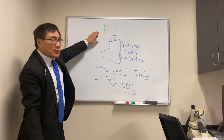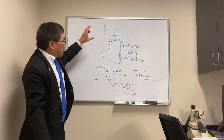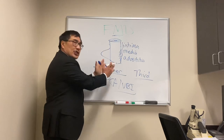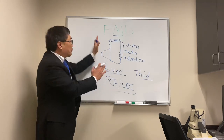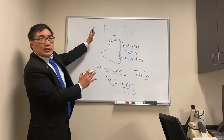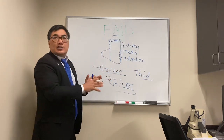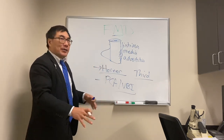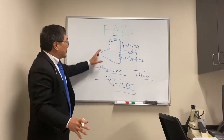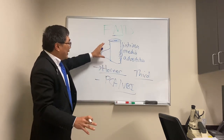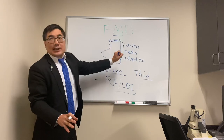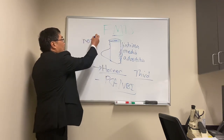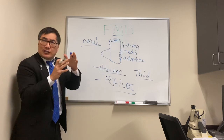Even though patients are born with fibromuscular dysplasia — it's congenital — they present later in life because the wall is just weak; it's a predisposing risk factor. Then something precipitates it: trauma, coughing, chronic vomiting, a Valsalva maneuver — something happens and they get a tear.